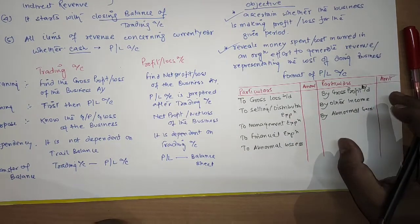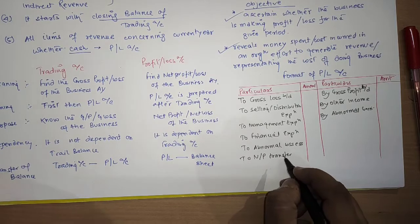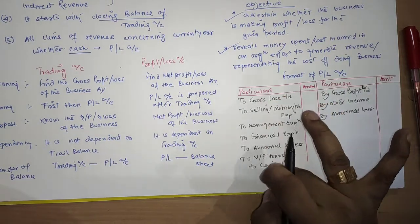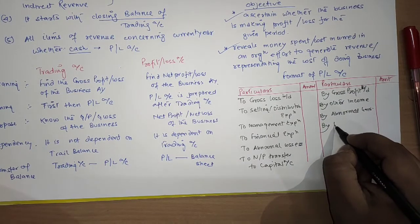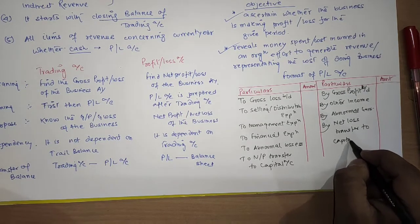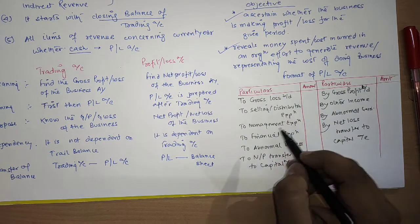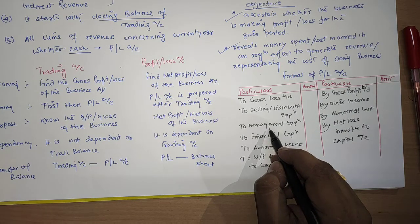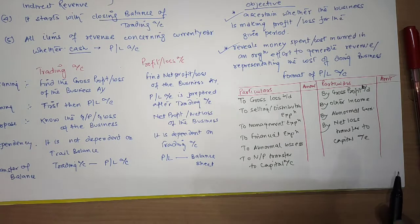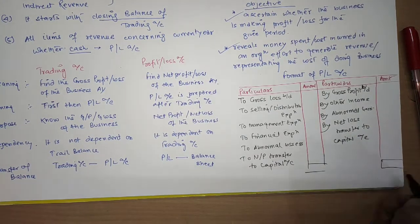Abnormal gains — such as profit from the sale of machinery or investments — are also shown on the credit side. If the credit side is higher than the debit side, we get net profit, which is transferred to the capital account. If the debit side is higher, we get net loss, also transferred to the capital account. Selling and distribution expenses include advertisement and carriage outward; management expenses include rent, office salaries, and printing stationery; financial expenses include discount allowed and interest on bills; and abnormal losses include goods lost by fire.